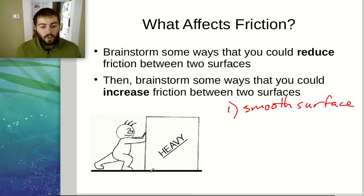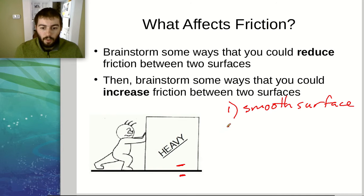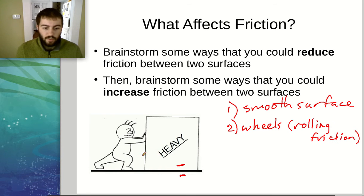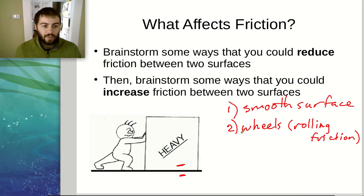We could lubricate the surface with something like oil to cause a more slippery interaction between the box and the floor. Another thing we could do is use wheels or rollers underneath the box so it can roll across the floor more easily. This is called rolling friction, whereas pushing the box directly along the floor is called sliding friction. Rolling friction is typically significantly less than sliding friction, so those are two easy things we could do to reduce the amount of friction.